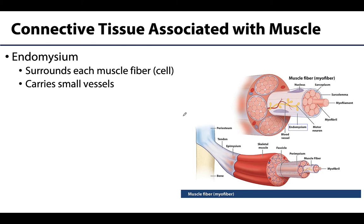Let's get started at the smallest level with the endomysium. Sometimes you'll hear endomysium or endomysium — either way, same thing. What this does is surround each muscle cell or each muscle fiber. So we're looking at one muscle cell here, and it is the connective tissue that's going to surround the cell — microscopic for sure. This layer is very thin and mostly made of reticular fibers. Importantly, it will have blood vessels associated and traveling along the endomysium, which will be important for the supply of nutrients to these individual muscle cells.